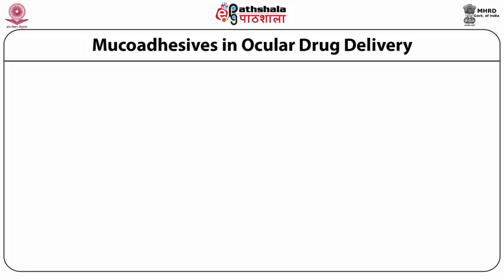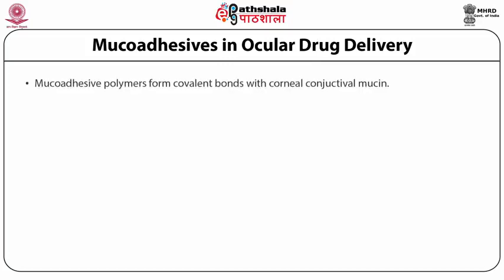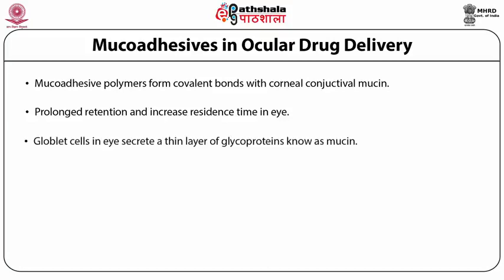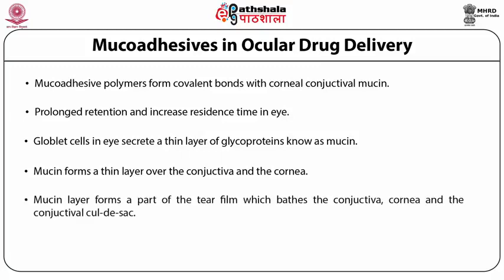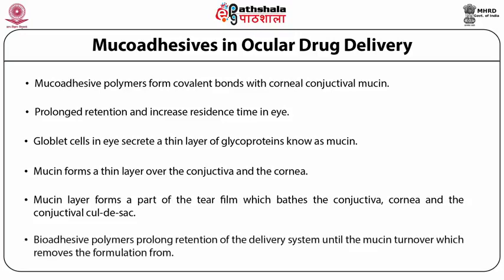Mucoadhesion is defined as the adherence of two substances — a mucosal surface along with a dosage form — by means of interfacial forces to enhance adhesion for a considerable period of time. Mucoadhesives for ocular drug delivery have gained tremendous importance. Mucoadhesive polymers form covalent bonds with corneal and conjunctival mucin, thereby prolonging retention of the dosage form and increasing the residence time of the drug in the eye. Mucin in the eye is secreted by goblet cells and forms a thin layer over the conjunctiva and cornea as part of the tear film.